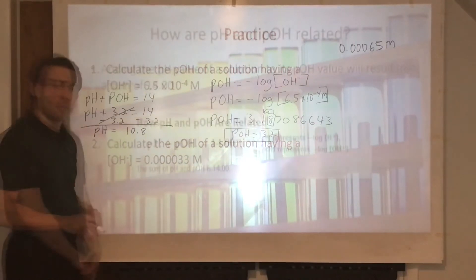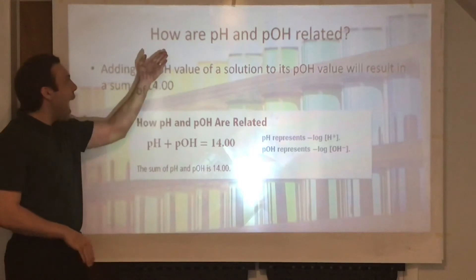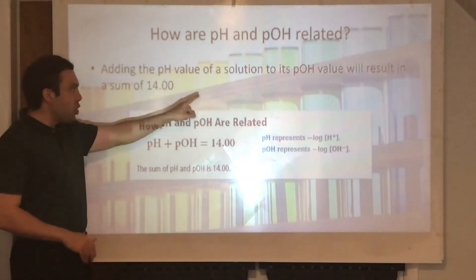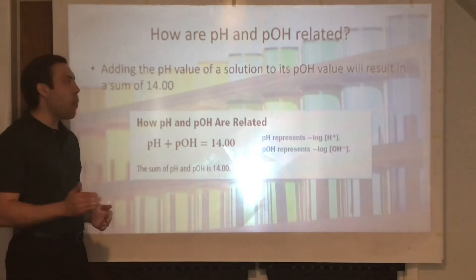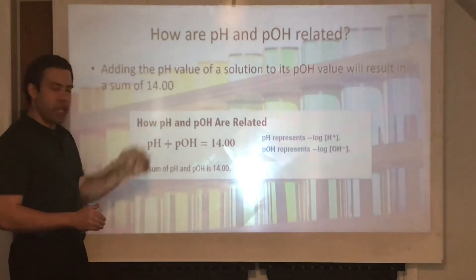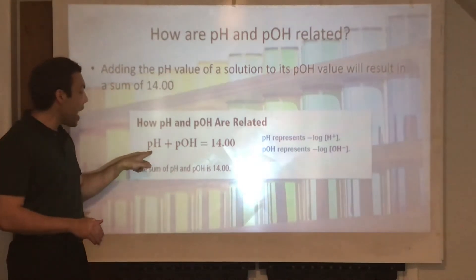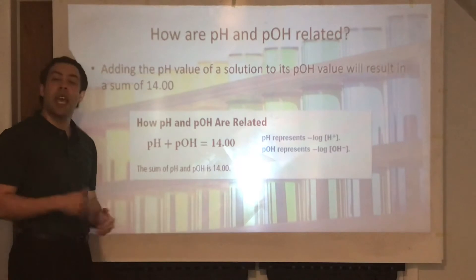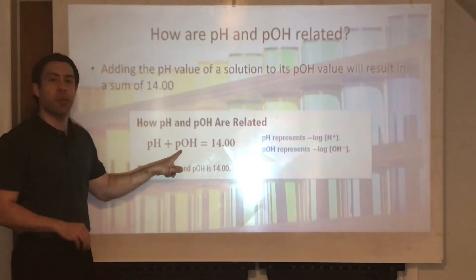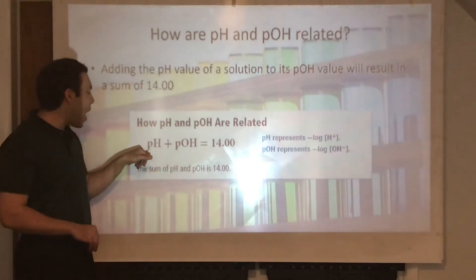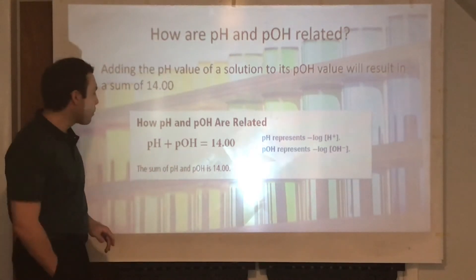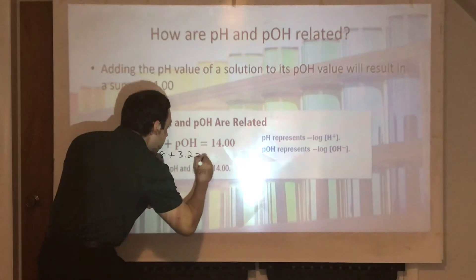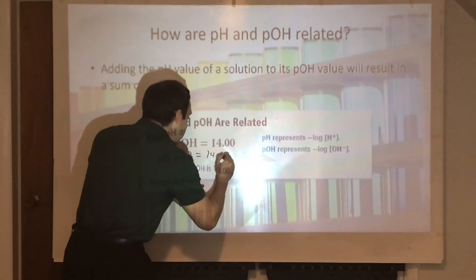In summary, how are pH and pOH related? By adding the pH value of a solution to its pOH value, you get a sum of 14.00. pH plus pOH equals 14.00. In the last problem, we had a pOH of 3.2, and we found pH to be 10.8 — and 10.8 plus 3.2 equals 14.00.